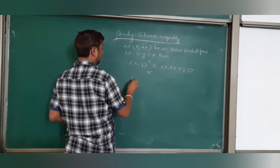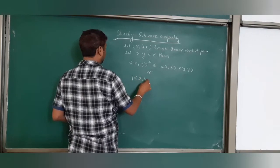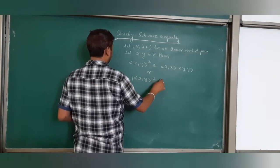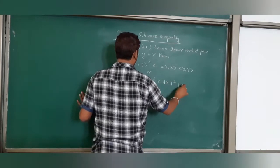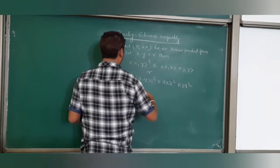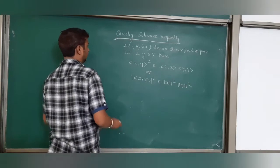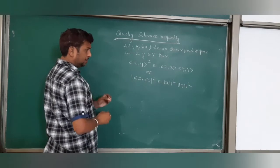Or sometimes it is written as inner product of X, Y equals norm of X times norm of Y squared. And how does it work? The proof is very simple.